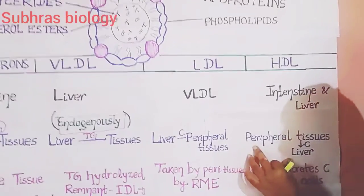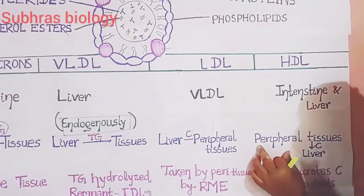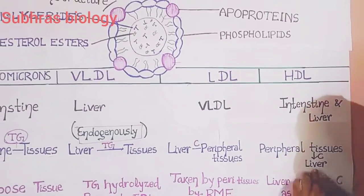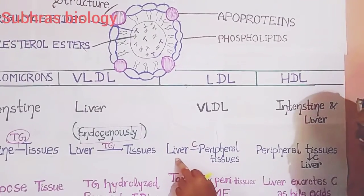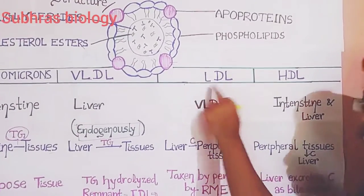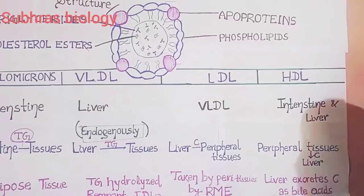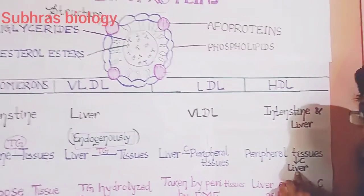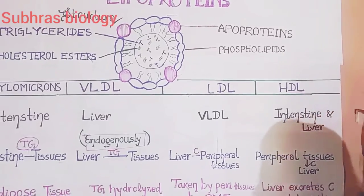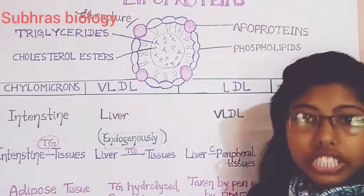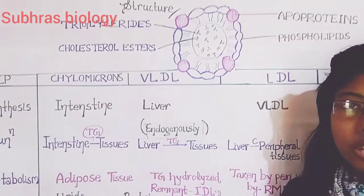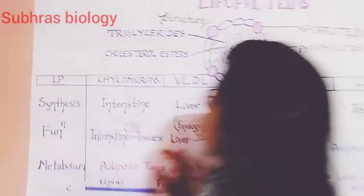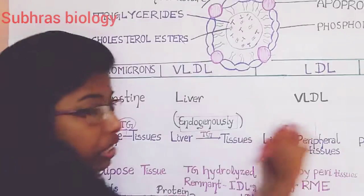Next, we are going for HDL. HDL is good cholesterol — it transports cholesterol from peripheral tissues to the liver. The cholesterol which is transported from the liver to peripheral tissues by the LDL gets collected by the HDL and transported to the liver, where elimination of cholesterol occurs. Cholesterol can be utilized for producing steroid hormones or some bile acids, etc. These are all about the functions of the lipoproteins.